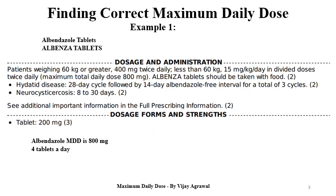So how can we find the correct maximum daily dose? I have taken examples from the patient information leaflet available on the internet. Example one is Albenza tablets that contain albendazole. In the doses and administration section, they have given that patients weighing 60 kg or greater: 400 mg twice daily, which becomes 800 mg.